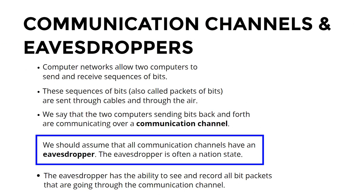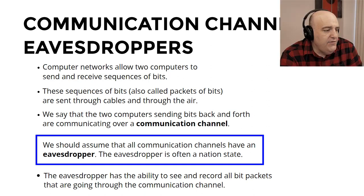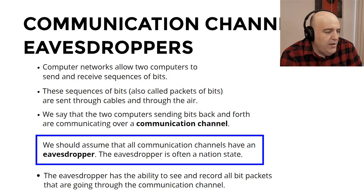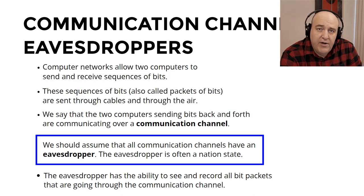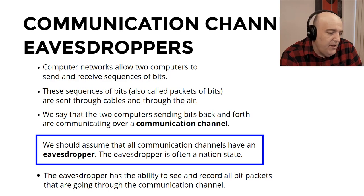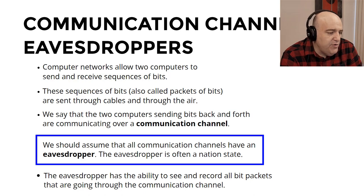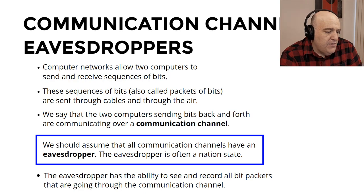Communication channels allow two computers to communicate over a network, sending sequences of bits. An important point is that we should assume every communication channel has an eavesdropper. The eavesdropper might be a nation state or some other entity. We should always assume our communications are being monitored and stored. The eavesdropper has the ability to see everything being sent over the communication channel.